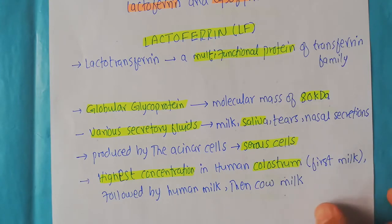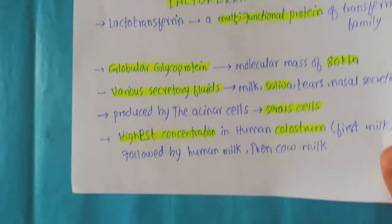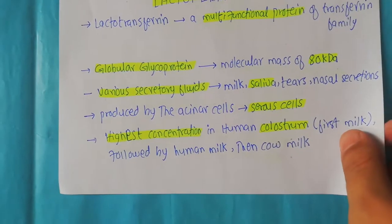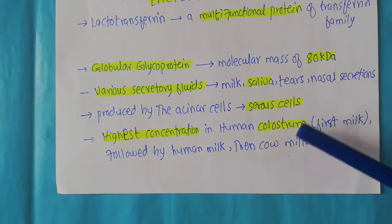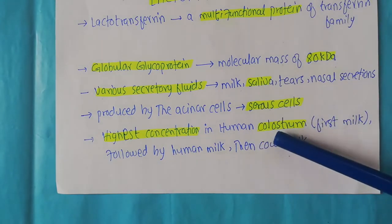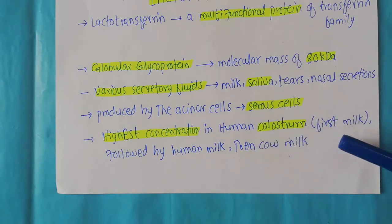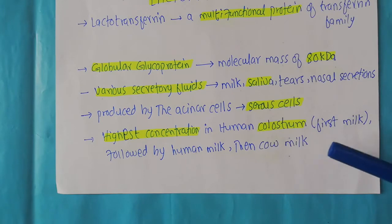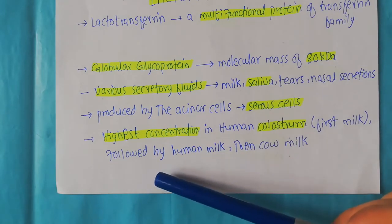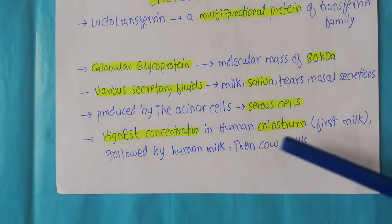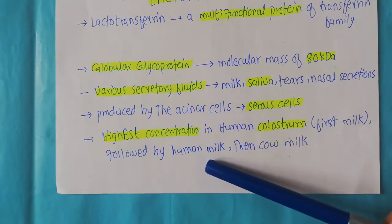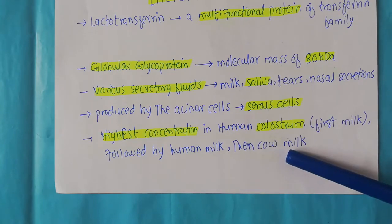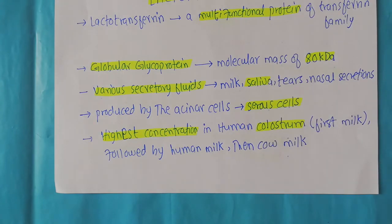The highest concentration of lactoferrin is found in human colostrum, which is also known as the first milk. The concentration is highest in colostrum, followed by human milk, and then cow's milk.